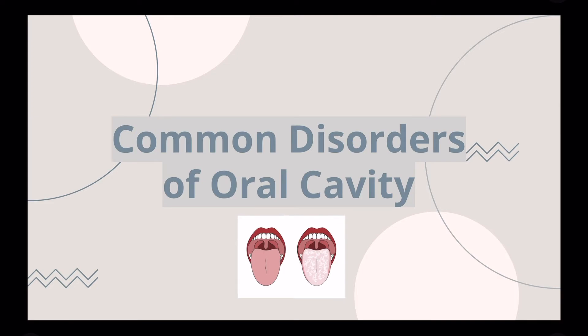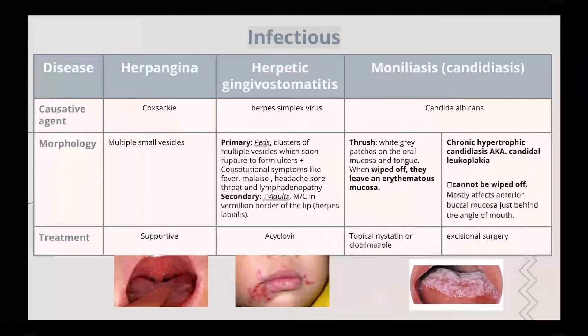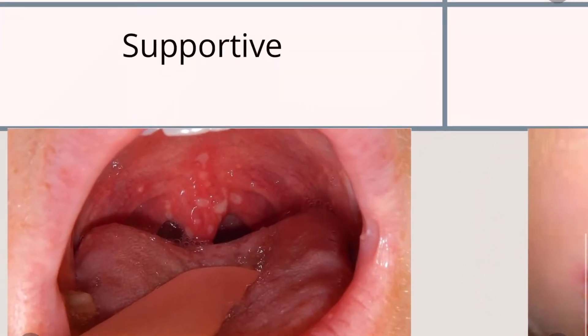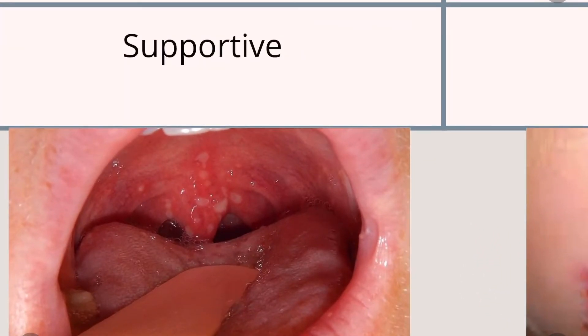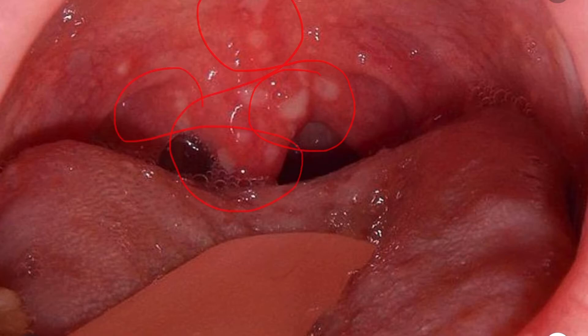Moving on to common disorders of the oral cavity. The most common is oral ulcers. Oral ulcers have various etiologies: infectious (bacterial, fungal, viral), autoimmune disorders, traumatic, neoplasms, and vitamin deficiencies. For infectious causes, we have herpangina — caused by the coxsackievirus — which most commonly affects children. It presents as small multiple vesicles in the mucosa of the mouth, and treatment is mainly supportive.